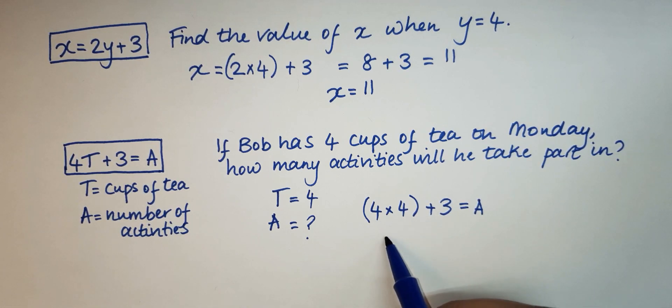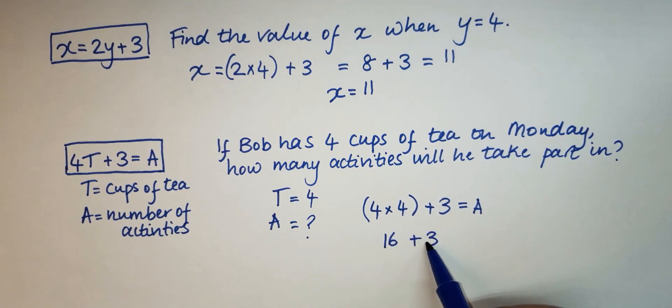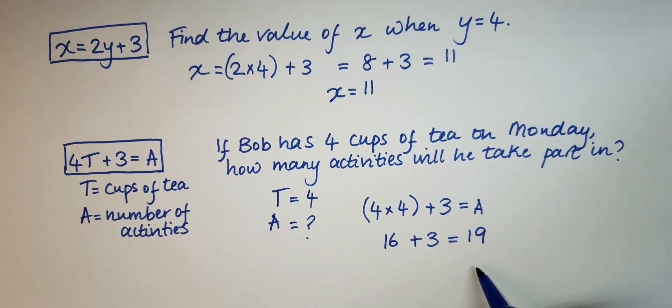That means that 4 times 4 is 16, 16 add 3 is 19. So therefore A is 19. That is the number of activities that Bob will take part in if he has four cups of tea on Monday.